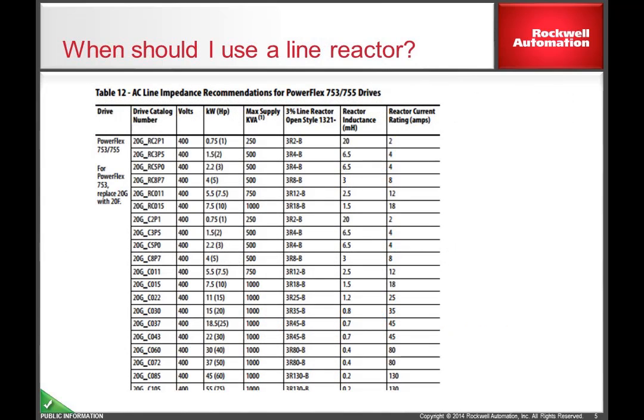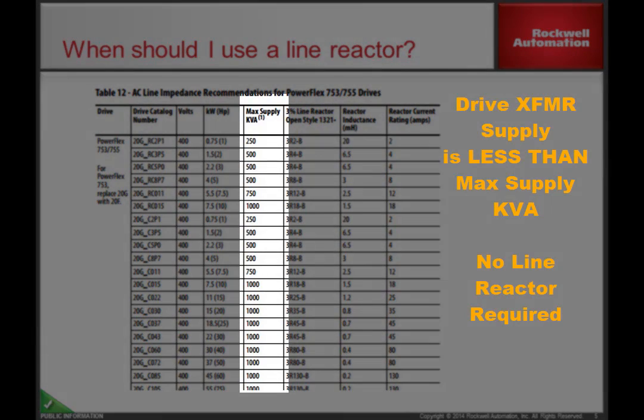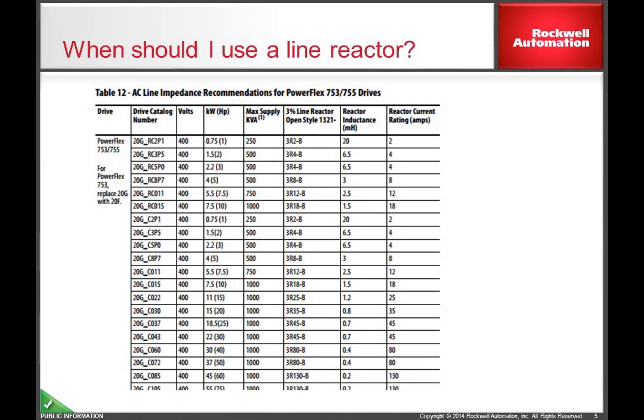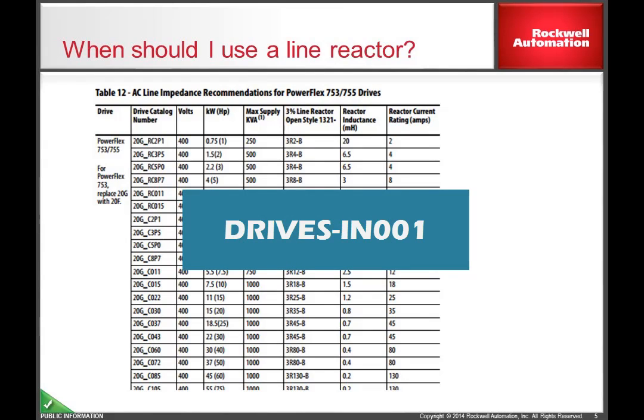If the transformer supply power to the drive is less than the maximum supply kVA corresponding value, no line reactor is required. If your supply transformer is larger than this value, a line reactor is recommended. For further details on understanding how this table was derived, reference the Drives-IN001 manual under the header AC Line Impedance.